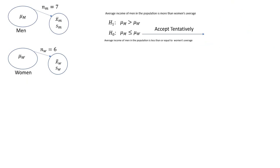We will ask our friend: what would be a significant event that can happen that you would allow us to reject the null hypothesis? He says: if you accept the null hypothesis, and based on that acceptance, you observe that something has happened that has a 10% chance of happening...